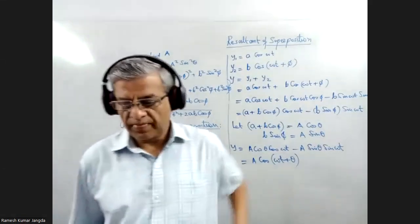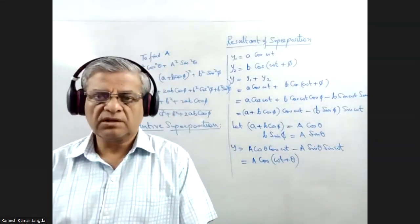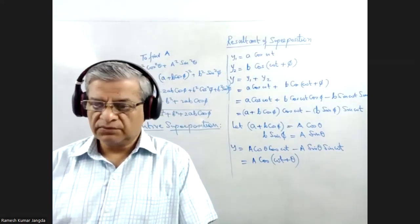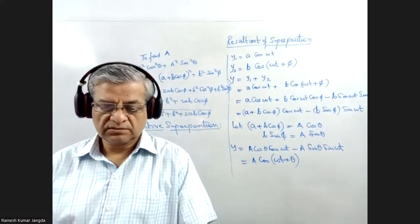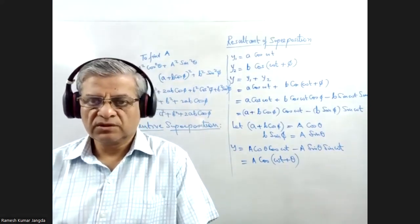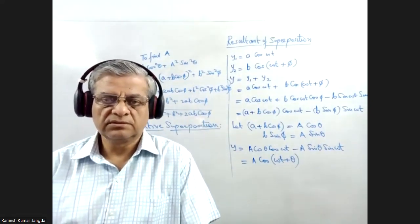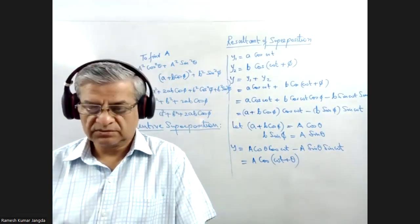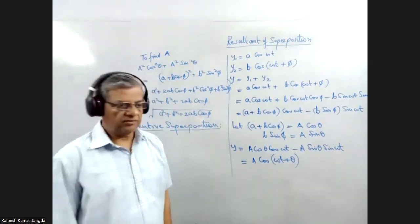Constructive superposition. Two waves are said to be interfering constructively when the two meet in phase. It means that they have the same angle.